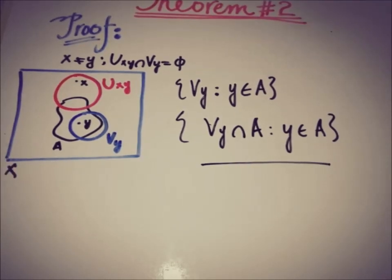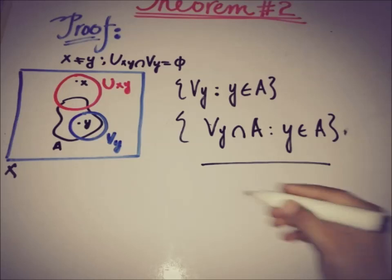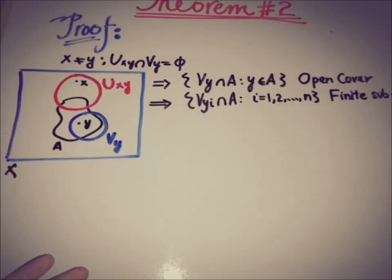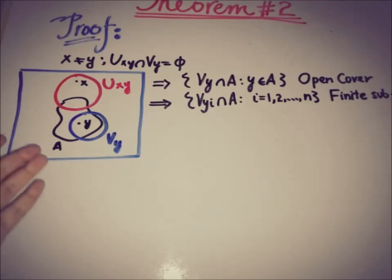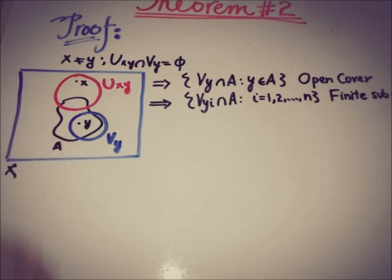Since A is a compact subset, this open cover of A must have a finite subcover. So there is a finite subcollection that covers A, and their union equals A. Corresponding to each y_i we also have U_{x,y_i}.